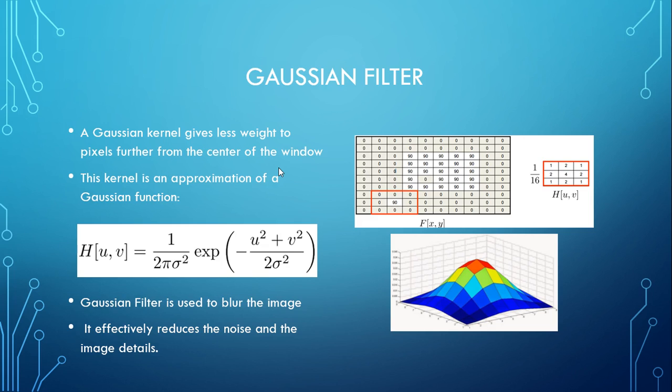A Gaussian kernel gives less weight to pixels further from the center of the window. This kernel is an approximation of the Gaussian function. The Gaussian filter is used to blur an image and it effectively reduces noise, but also reduces image details.